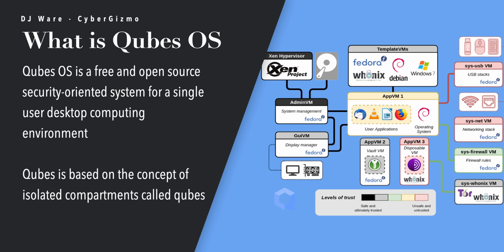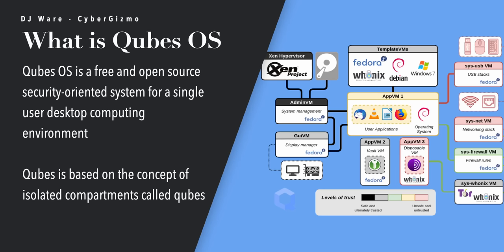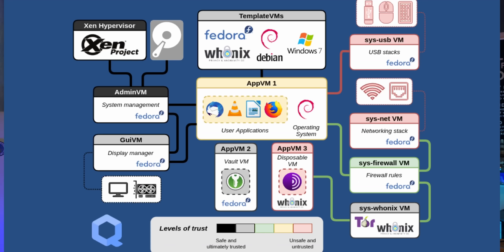For those of you that don't know what Cubes is, let's talk about that first. Cubes is a free and open source security-oriented system that is meant for single-user desktop computing environments. It is based on Linux, and it uses Xen as its architecture for creating virtual machines. Cubes is based on the concept of isolated compartments — things that they call cubes. In my parlance, where in the Department of Defense, we called them enclaves. Same kind of thing — it's a separation of concerns.